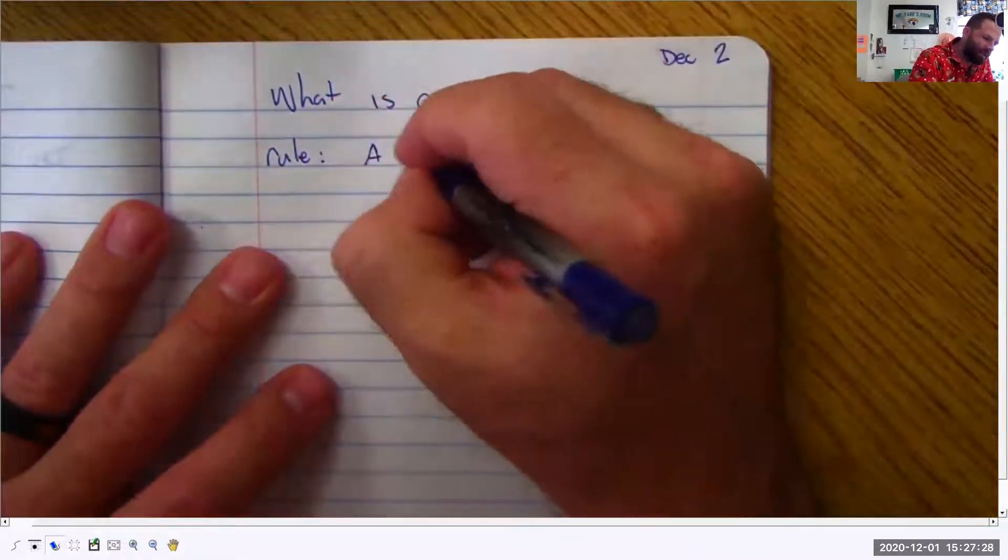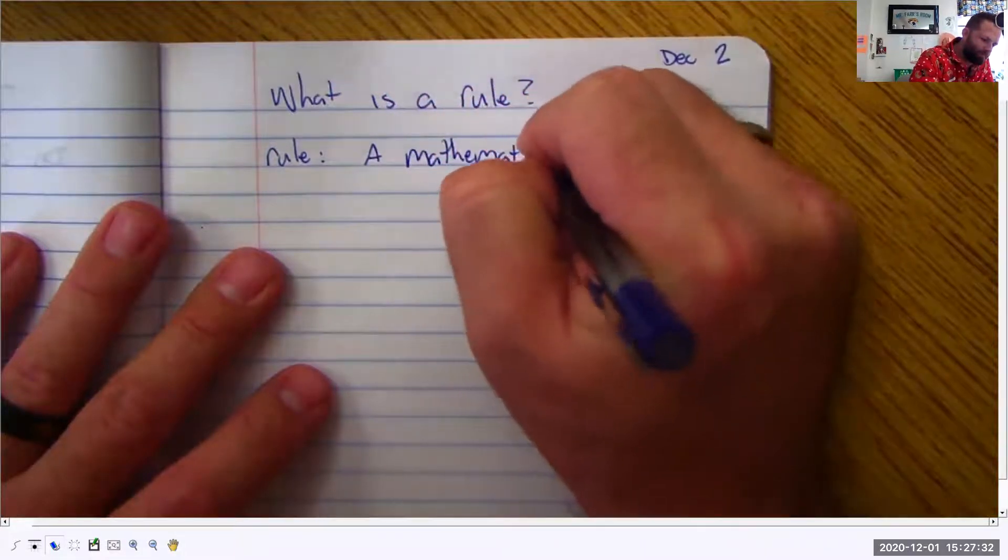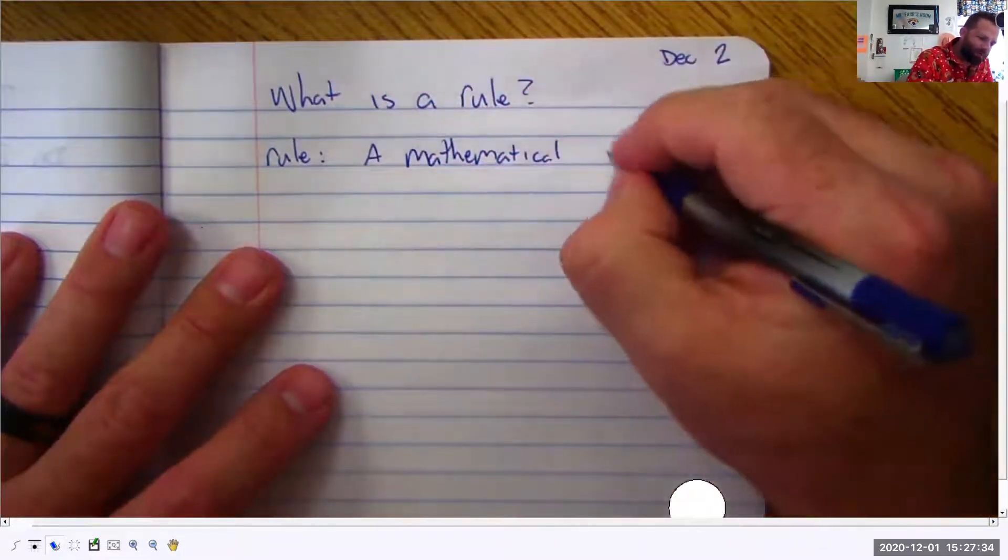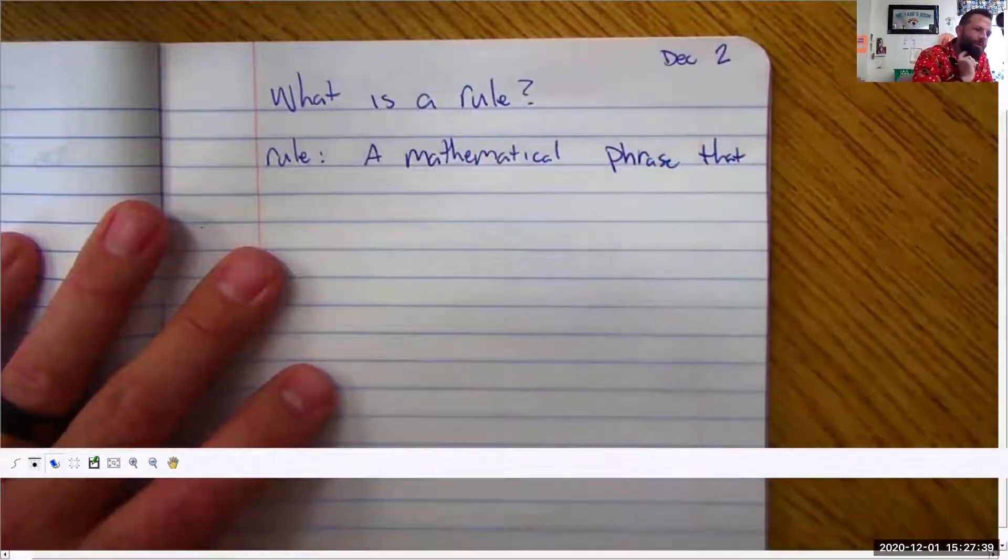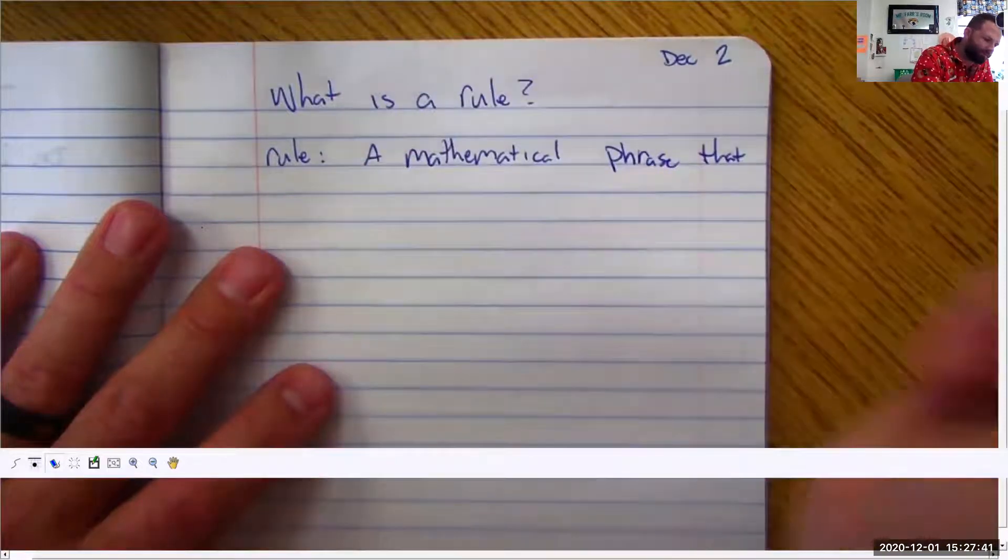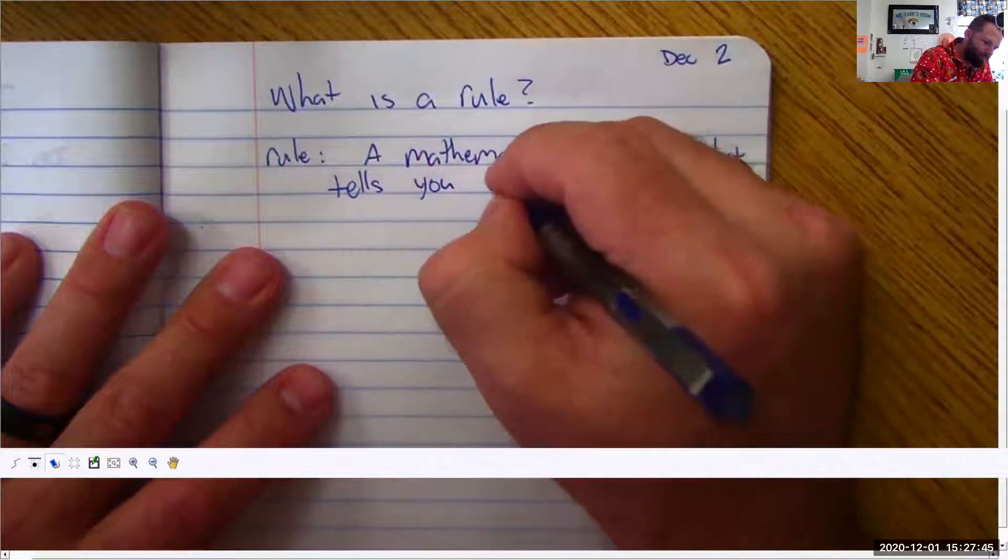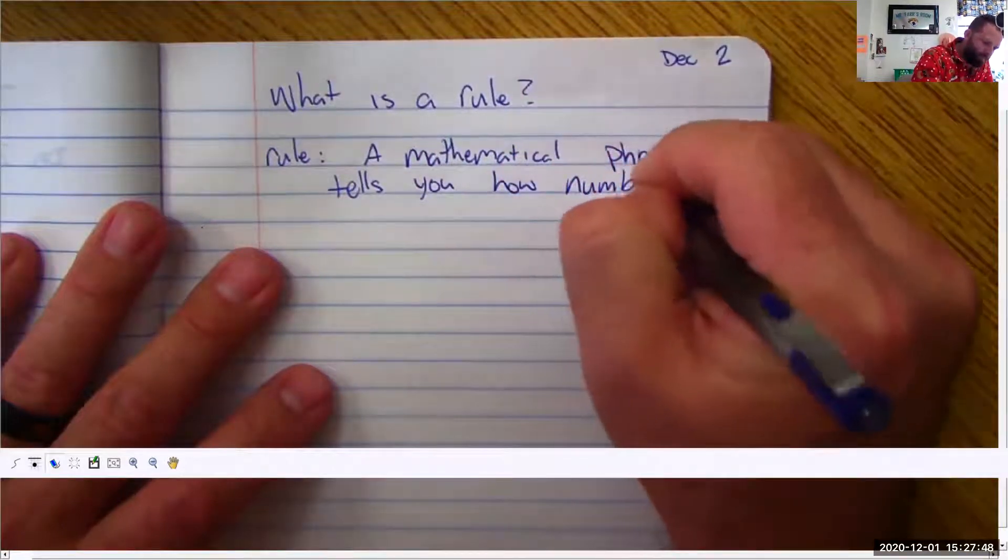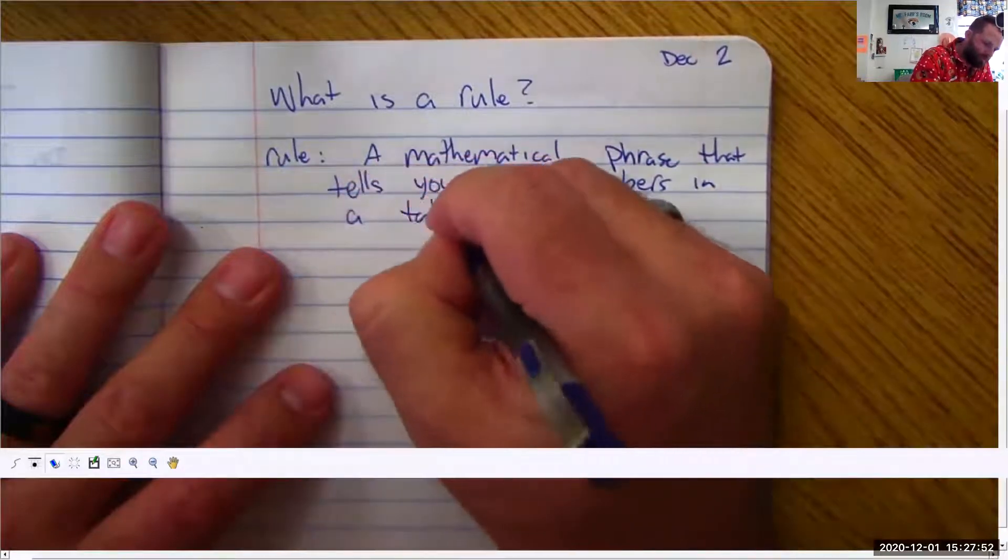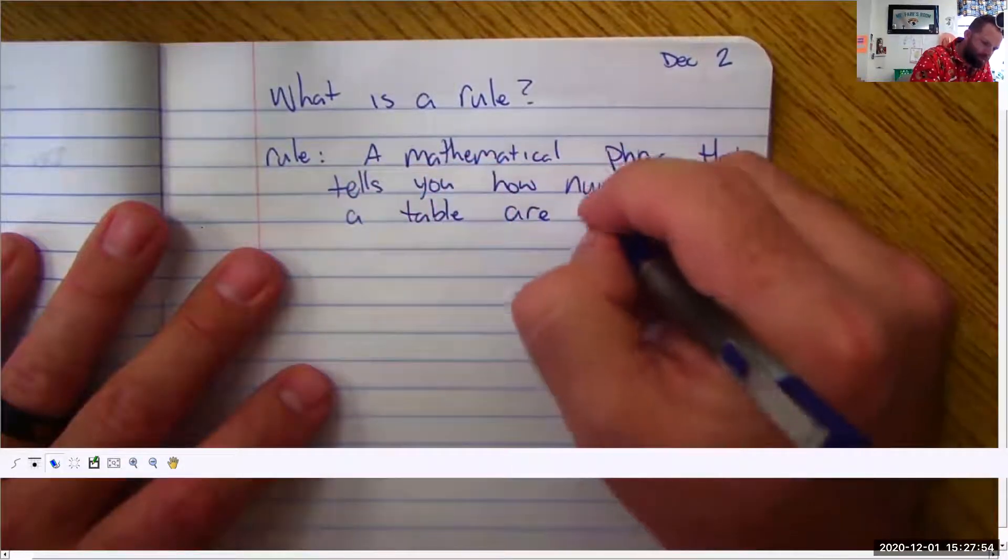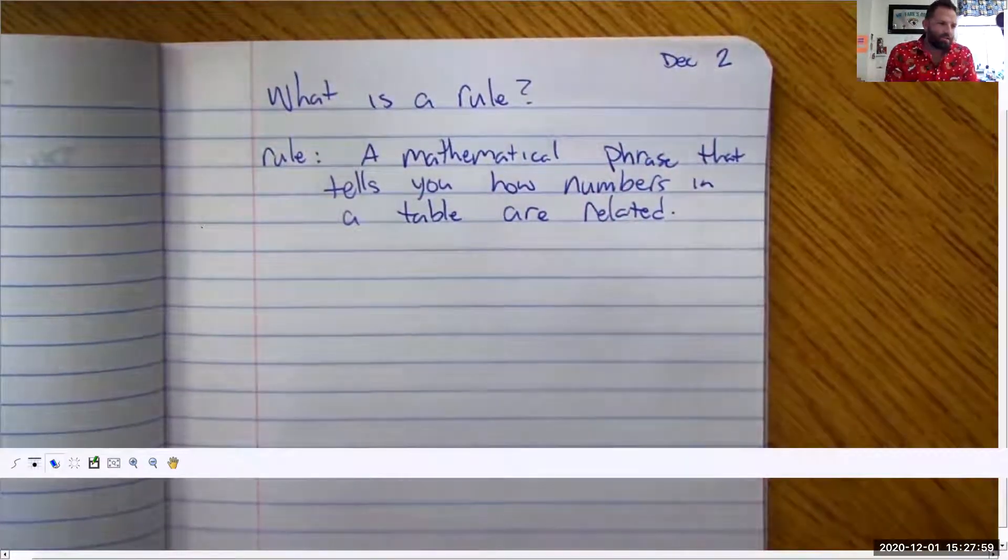A rule is a mathematical phrase that tells you how numbers in a table are related. Look handwriting looks terrible today. I apologize. I'm sorry.